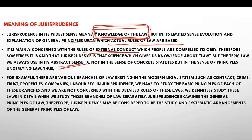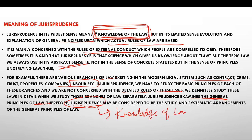For example, law has different branches — contract, crime, trust, property, company, labor — and there are different laws in each. To study each law in detail, there are separate subjects. But to understand the keywords, the base, and the general principles of law, we study jurisprudence. That is why we call it knowledge of law — we study jurisprudence for its systematic understanding.